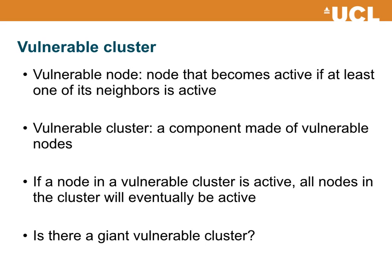To understand when global cascades can occur, a useful concept is the one of vulnerable clusters. The first definition is that of a vulnerable node: a node that becomes active if at least one of its neighbors is active. This is a node which is very easy to activate because as soon as one neighbor is active, the node becomes active. A vulnerable cluster is a set of vulnerable nodes that are connected between them through paths — it's a component made of vulnerable nodes. If a node belonging to the vulnerable cluster is activated, then eventually the whole cluster will be activated, because all nodes in the cluster are vulnerable, so having one active neighbor is enough for them to become active.